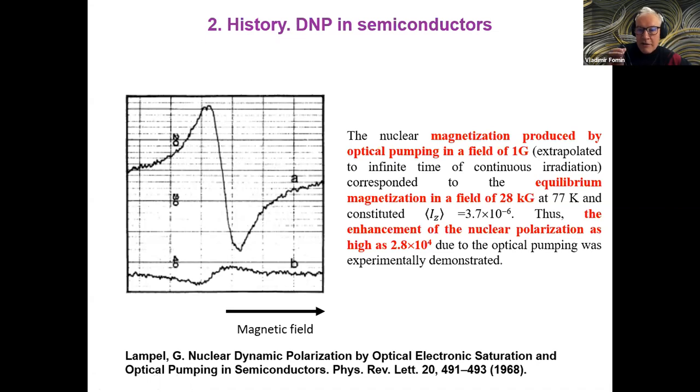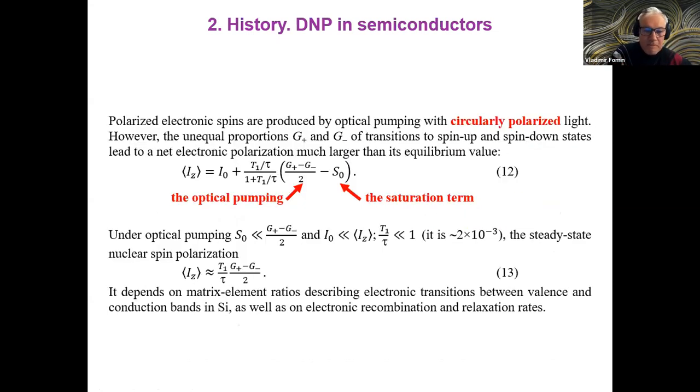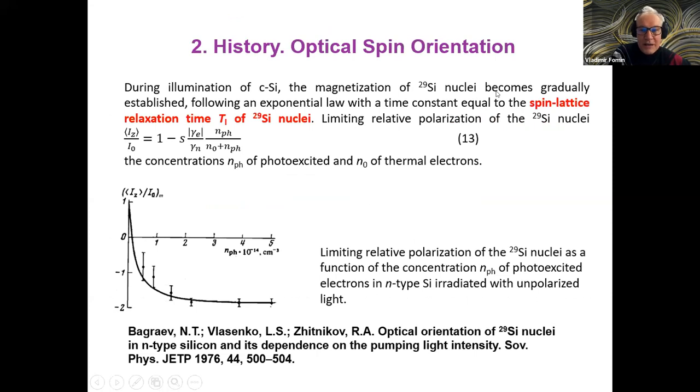These efforts were related also to pumping with circularly polarized light, which gives already this enhancement due to the optical pumping rather than prevalence over the saturation term. It can be also related to during illumination of crystal silicon, the limiting polarization of these nuclei occurs to be dependent on the concentration of photo-excited excitons and electrons. If there are photo-excited electrons, they produce additional enhancements of this effect of dynamical nuclear polarization.